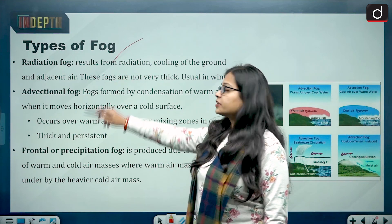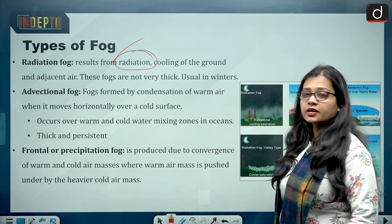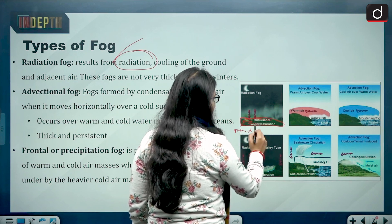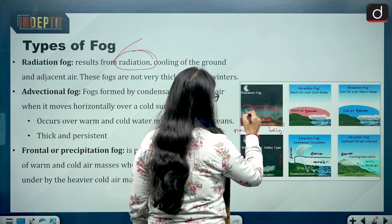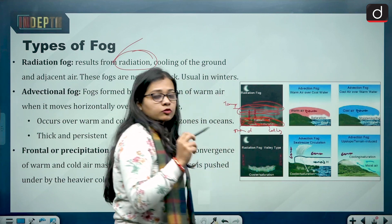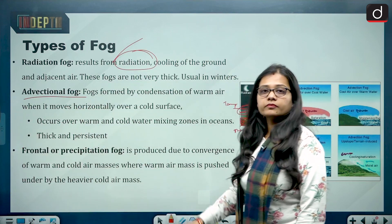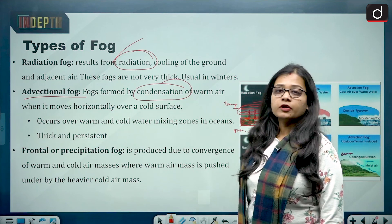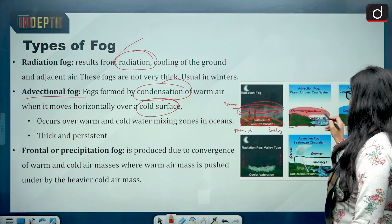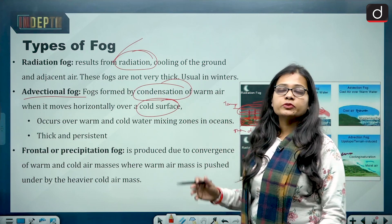There are two main types of fog: radiation fog and advectional fog. Radiation fog results from the cooling of the ground and adjacent air — there is a temperature difference between the ground and the area above it, which causes fog formation. Advectional fog is formed by condensation of warm air when it moves horizontally over a cold surface. When warm air and cold air come into contact with each other, the temperature difference leads to fog formation.